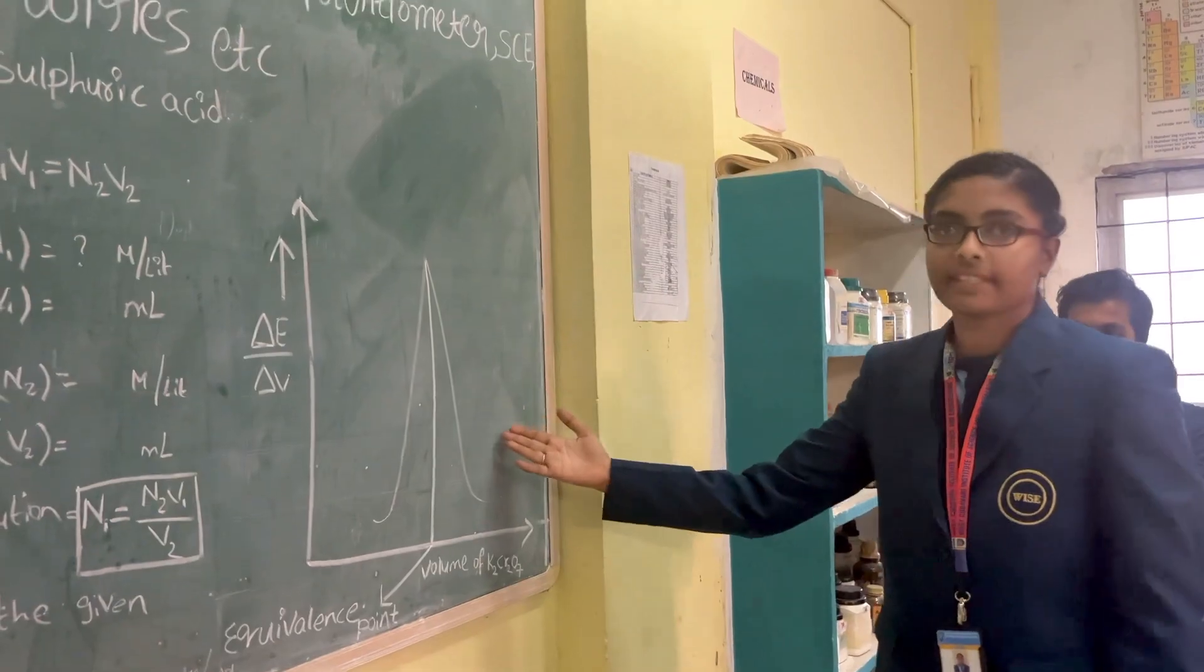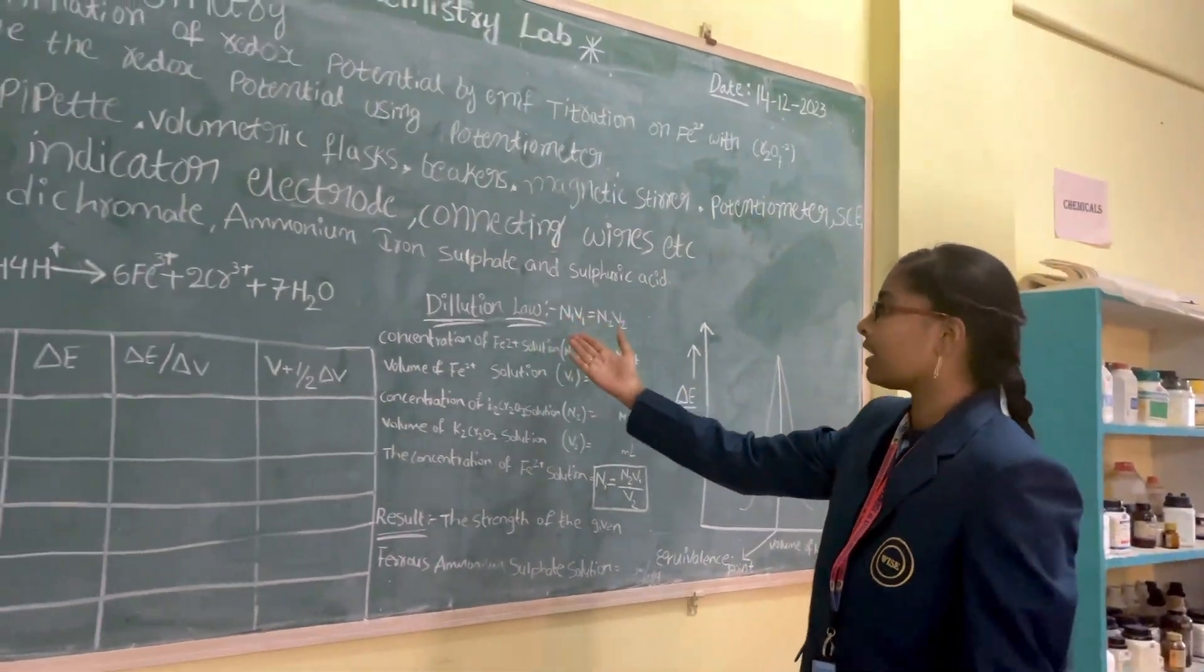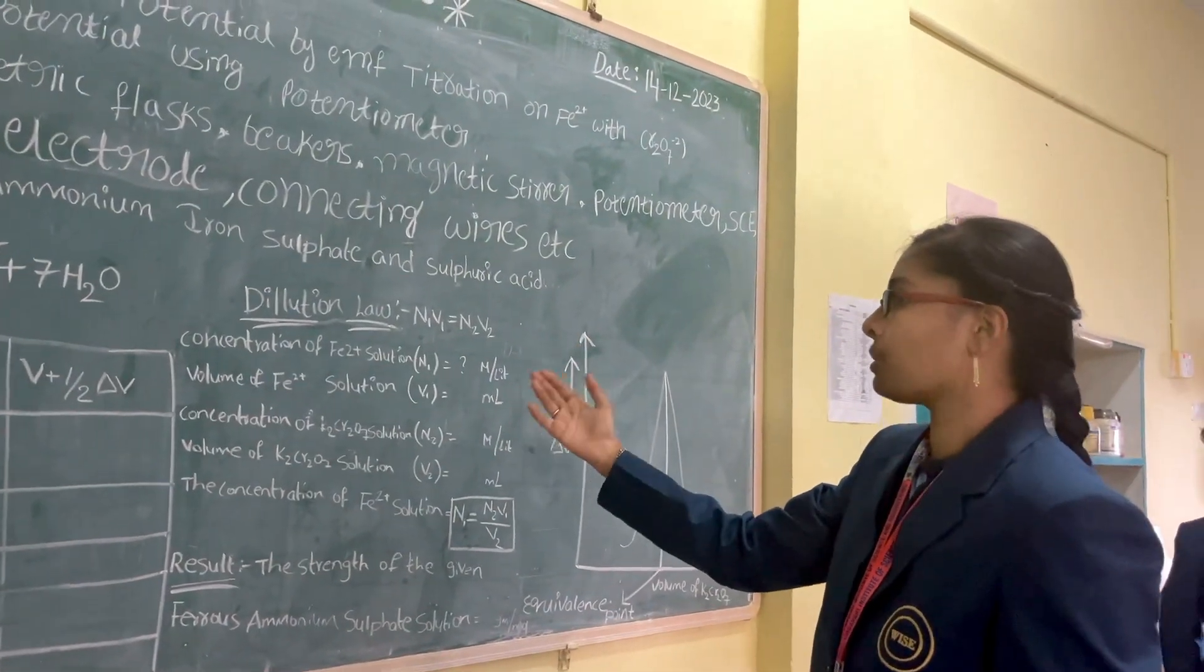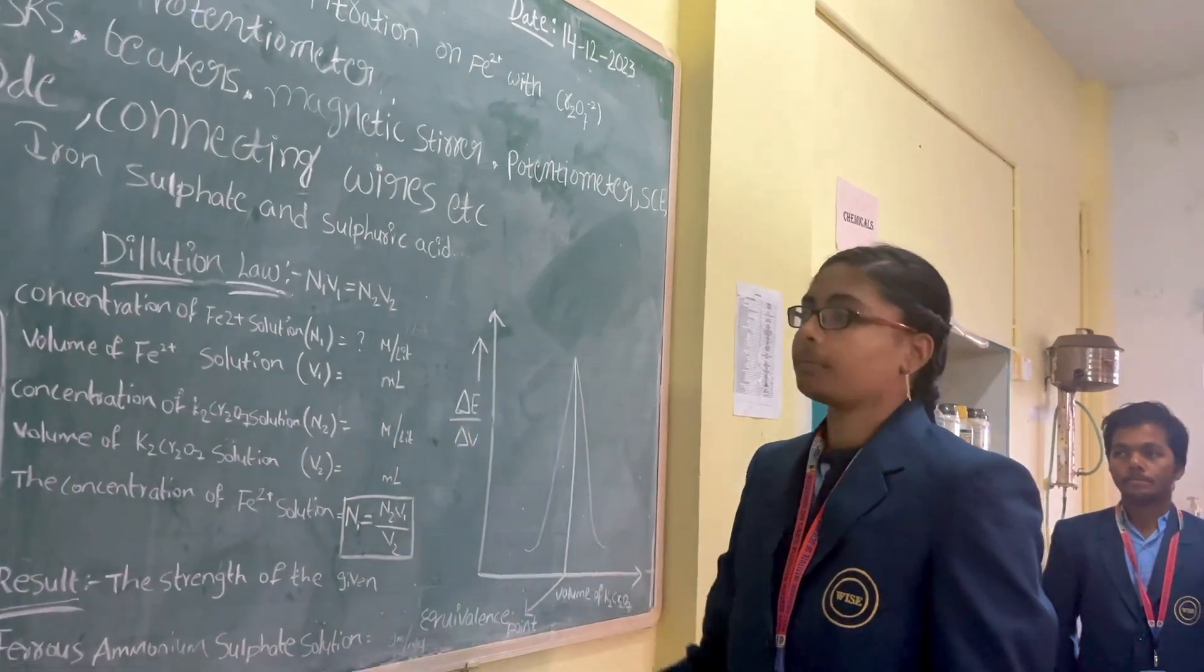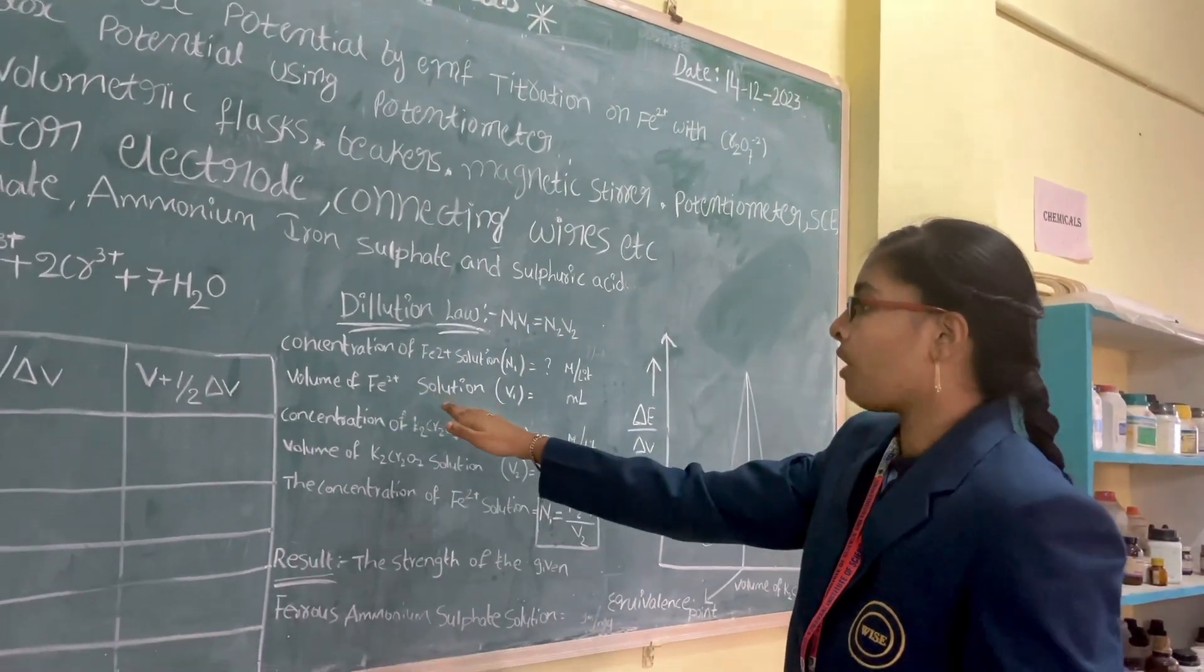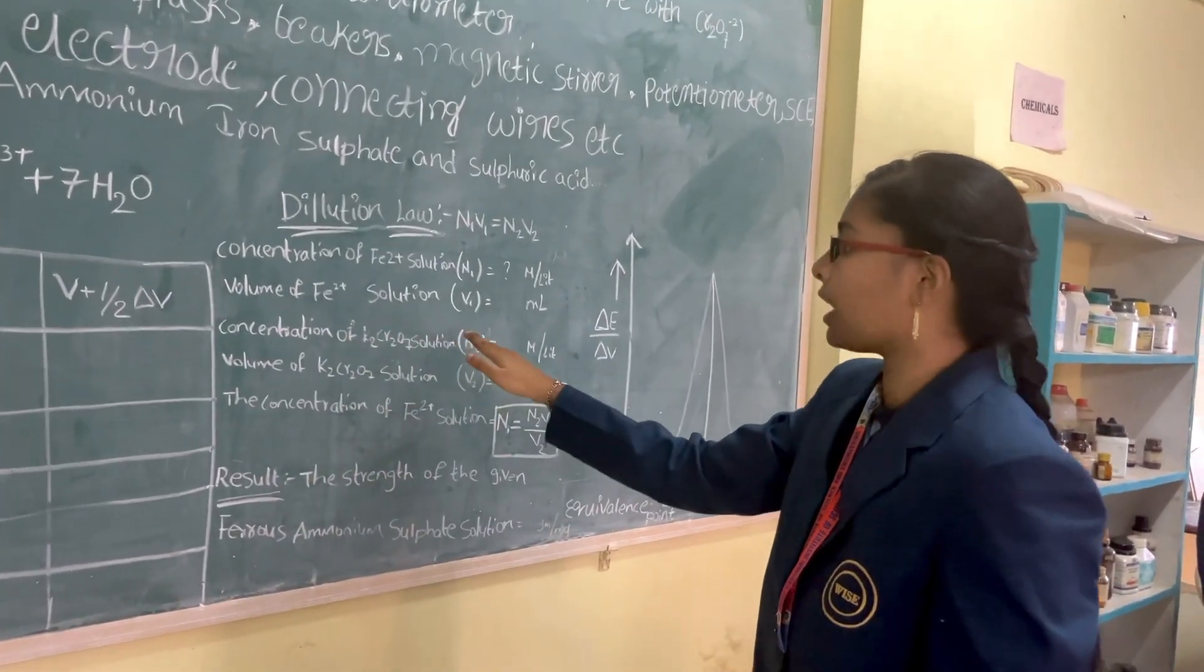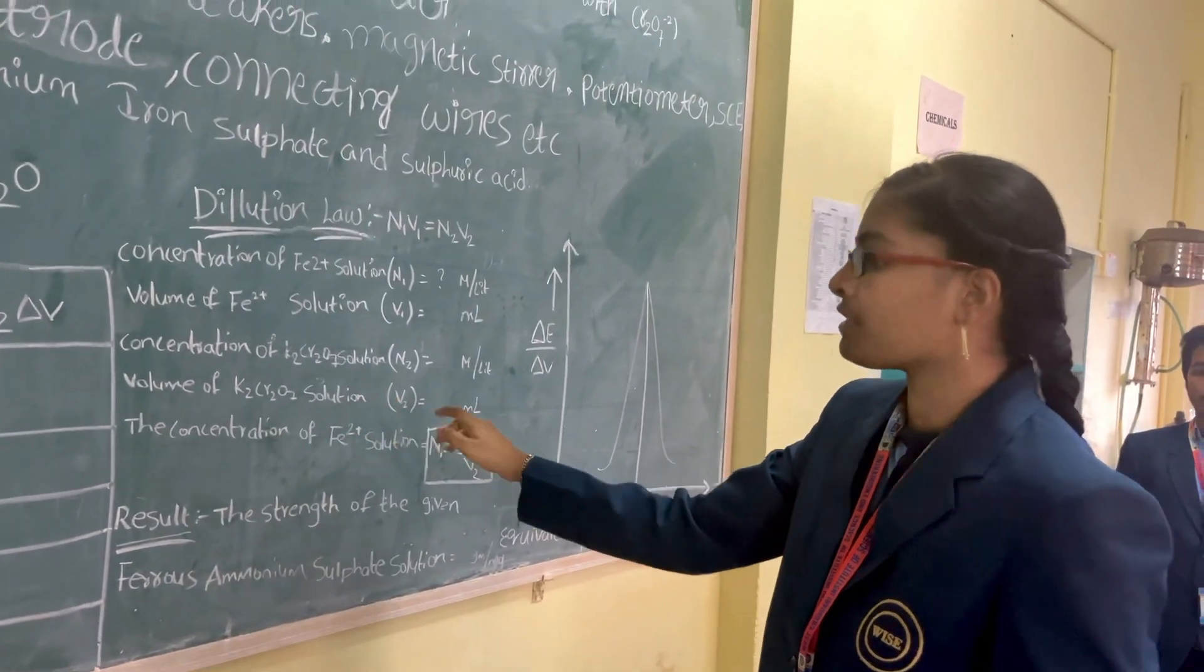We have to substitute the values in the dilution law to calculate the potassium dichromate solution. The formula is N1V1 equals N2V2, where N1 is concentration of Fe2+ solution, V1 is volume of Fe2+ solution, N2 is concentration of K2Cr2O7 solution, and V2 is volume of K2Cr2O7 solution.